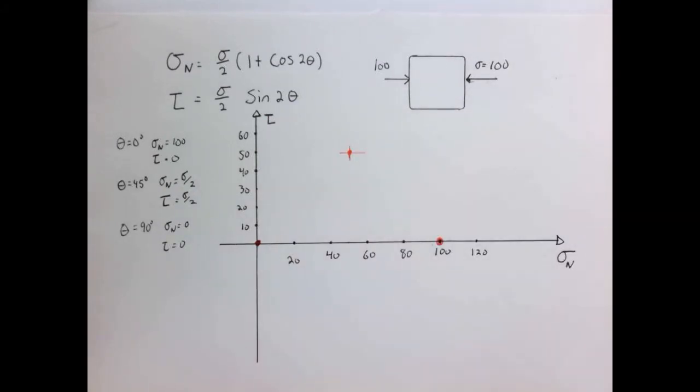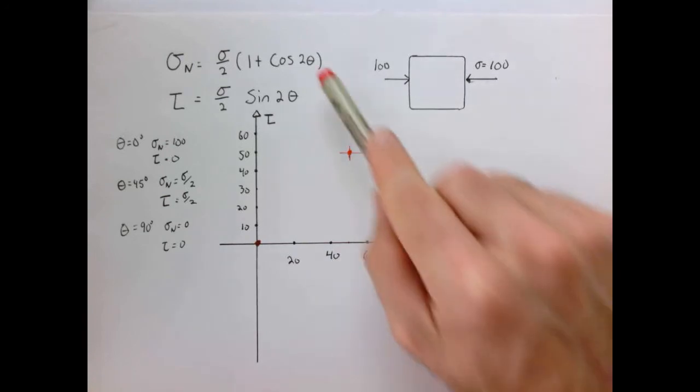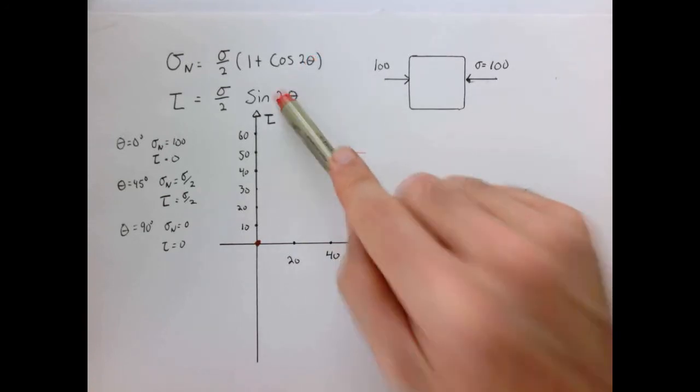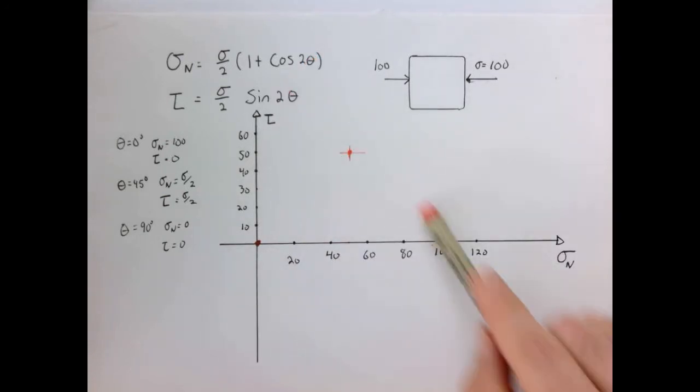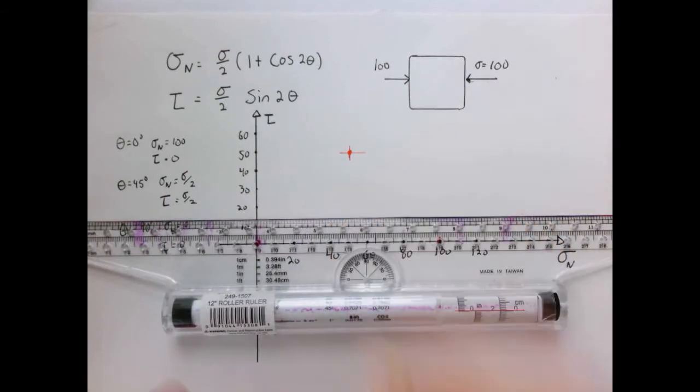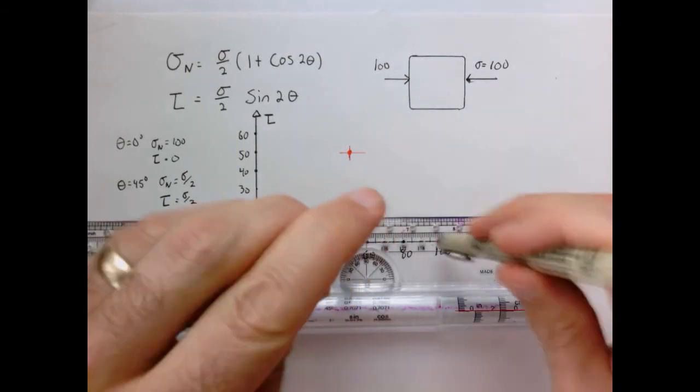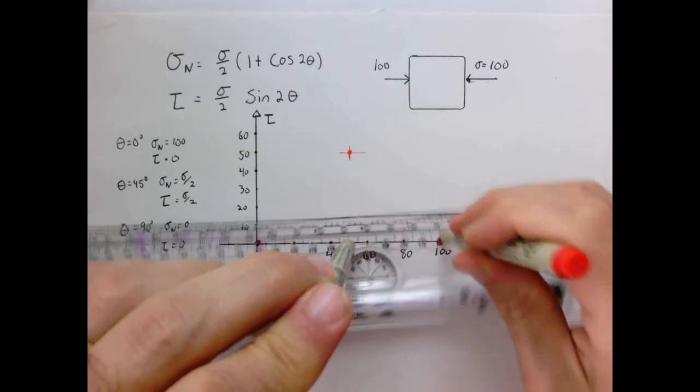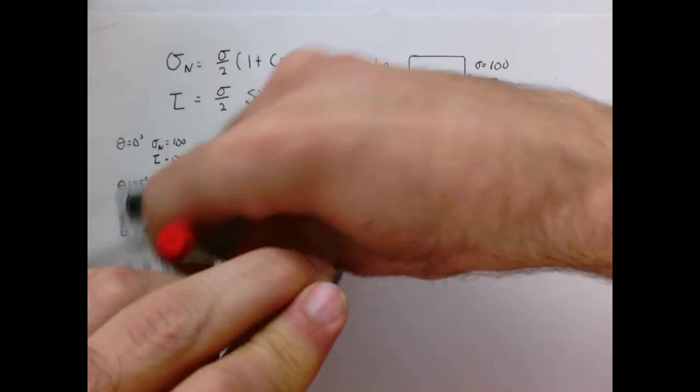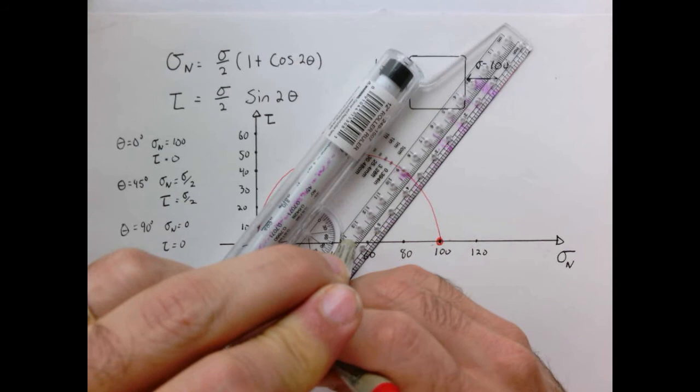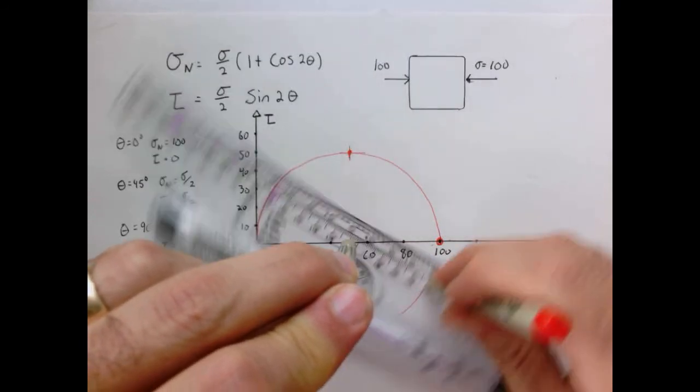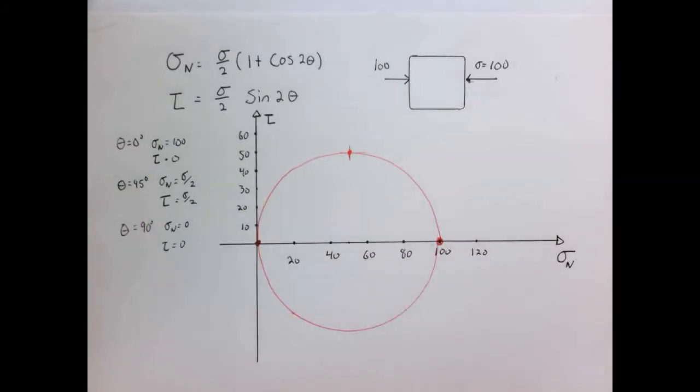Now, if we think about it, cosine theta, sine of theta, trace out a circle. So what we really have here are points that if we plugged in a bunch of values of theta, we would see trace out a circle. And so there it is.